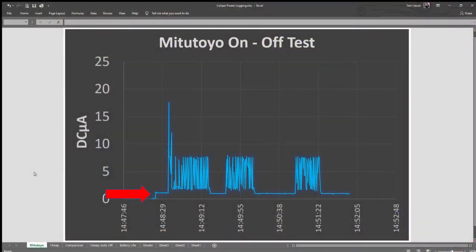Displaying that data in Excel, this is the initial on current. This spike is the calibration or the setting of the caliper when you first put the battery in. This is the powered on current. It's fluctuating, but let's take a guess at it and say it's 5 microamps. And when the Mitutoyos are switched off, we get just 1 microamp.